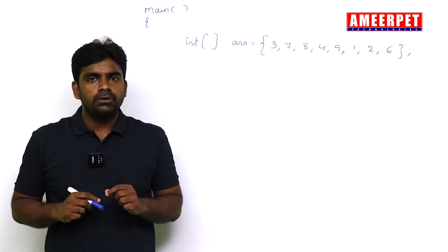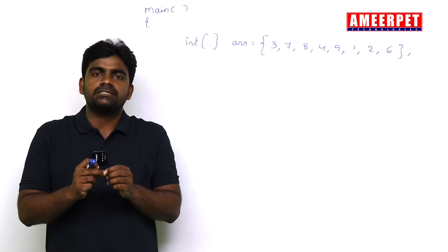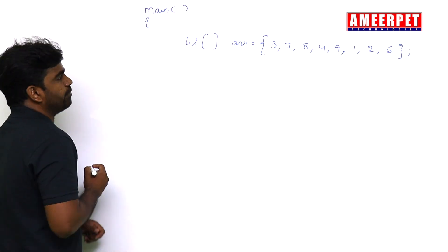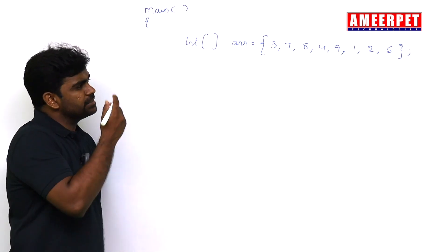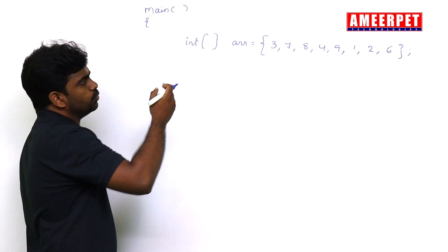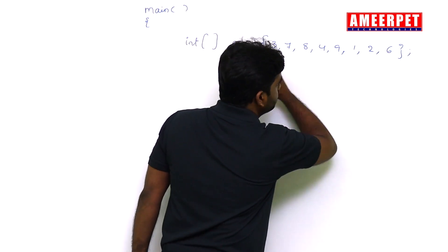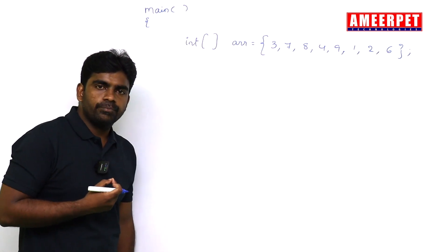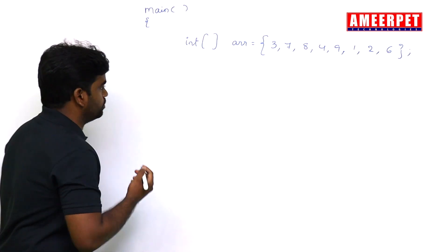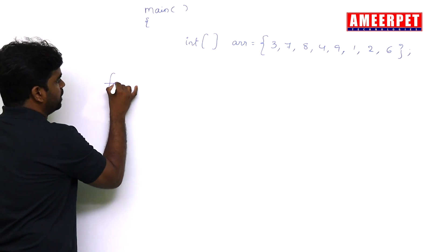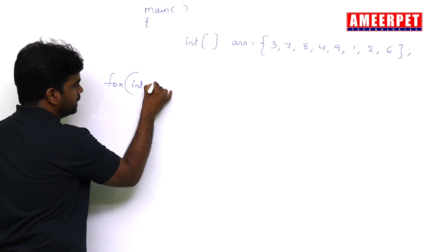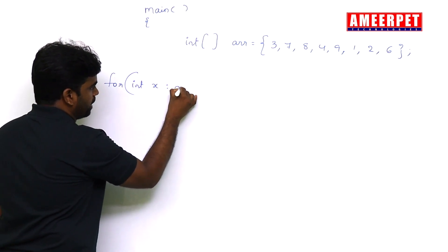First of all, how to print even numbers. We are checking all elements from start to end. Instead of using for loop, we go with the for-each loop. For each element, we are collecting it into x from the array.